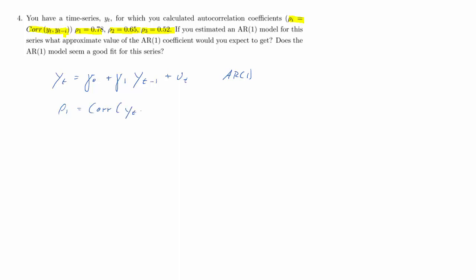You have learned that there's a relationship between the first-order autocorrelation rho 1 and the AR(1) coefficient gamma 1. The first-order autocorrelation is the correlation between yt and yt minus 1, and in an AR(1) process — only in an AR(1) process — that equals gamma 1. So in our case, we would obtain an estimated value for gamma 1 of approximately 0.78, and we'll use exactly 0.78 for the remainder of the question.